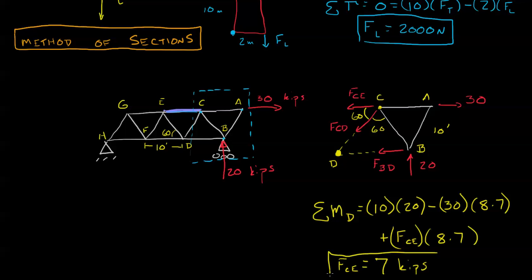So here, by isolating carefully our unknown plus two additional members, we're able to use the method of sections to find out that the force CE is about 7 kips. Notice all the steps that we bypass. This is the power of the method of sections.